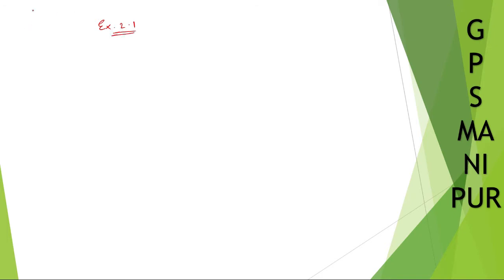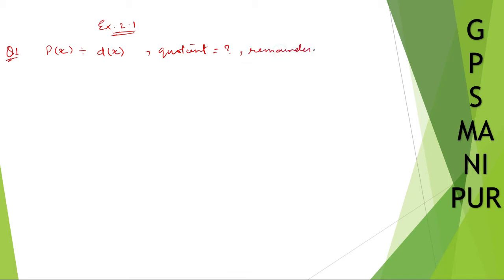We are starting with Exercise 2.1, question number one — this is the chapter called Polynomials. Question number one says: divide the polynomial p(x) by the polynomial d(x). We need to find the quotient, we need to find the remainder, and we need to verify the division algorithm in each of the following.